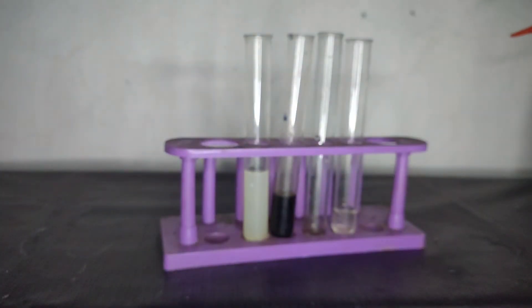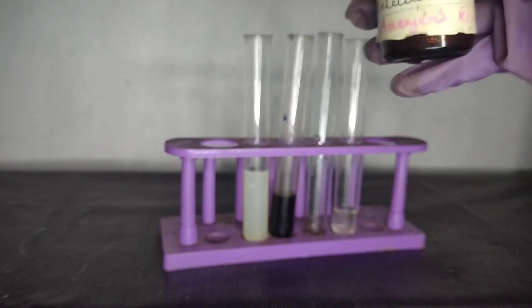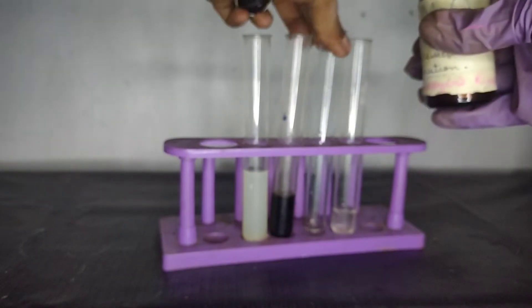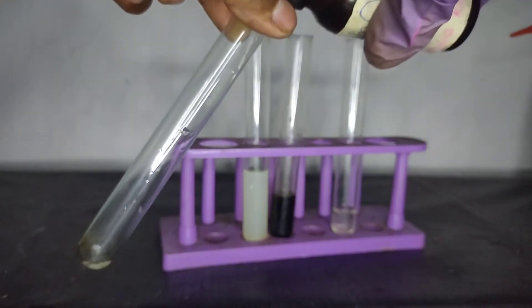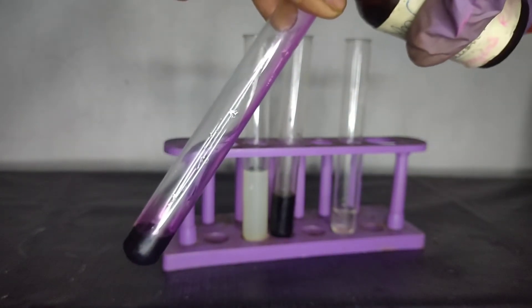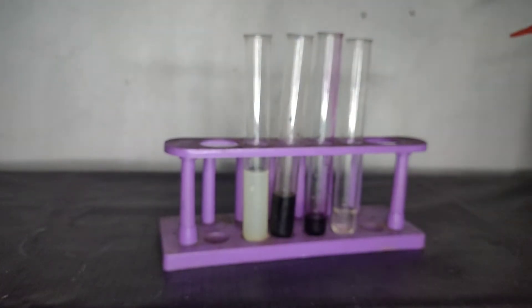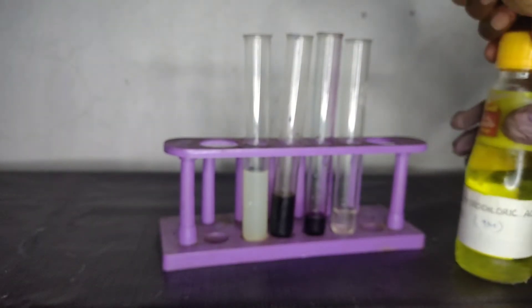Now to this, we need to add chlorine water. So to prepare it, we take potassium permanganate solution into a test tube. Now to the potassium permanganate solution, add some concentrated hydrochloric acid.